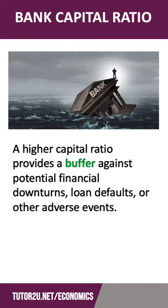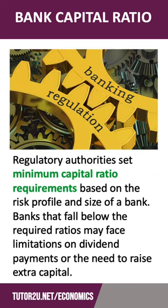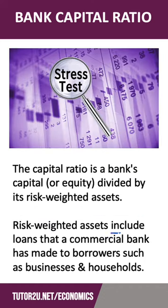A higher capital ratio is essentially a buffer against big downturns, rising loan defaults, or other adverse events. Indeed, the regulatory authorities may set minimum capital ratios based on the risk profile and the size of a bank, and a bank that falls below the ratios may face limits on how many dividends they can pay out, or they may be asked to raise extra capital.